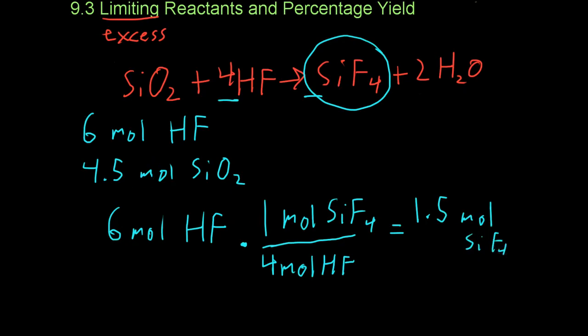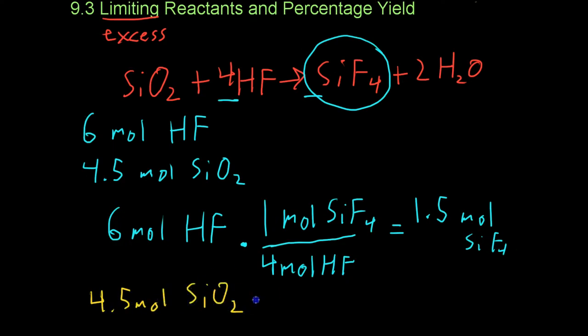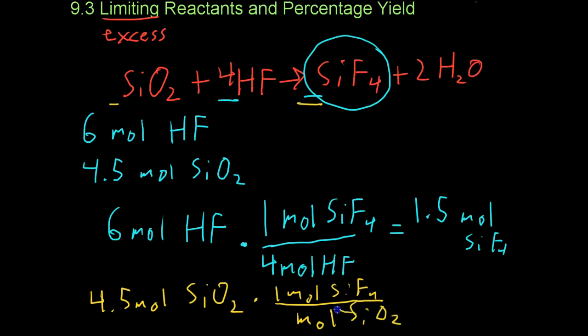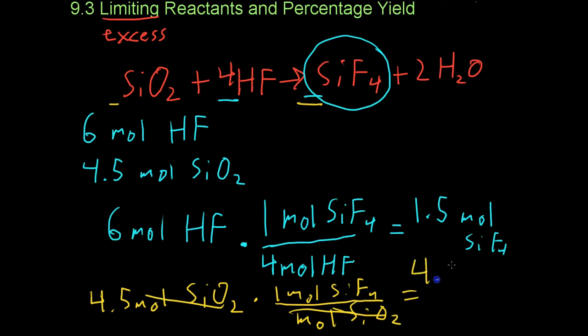You repeat the same process with the 4.5 moles of silicon dioxide. You take the molar ratio again. In this case, it's a one to one, which is really simple. It's 1 mole silicon tetrafluoride for every mole of silicon dioxide. You cancel the units to make sure you're doing it right, and you end up with a possible 4.5 moles of silicon tetrafluoride.